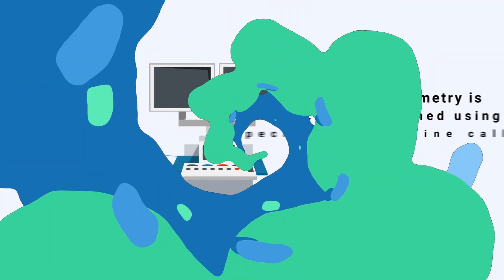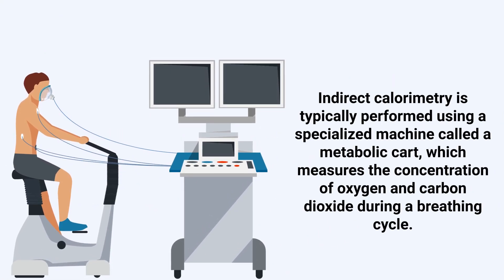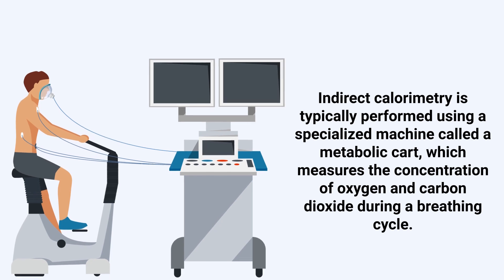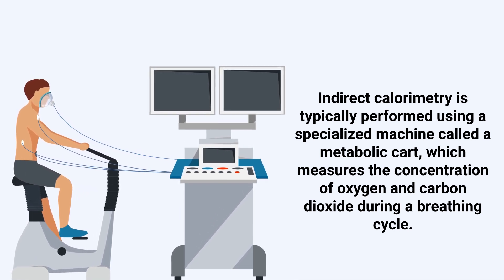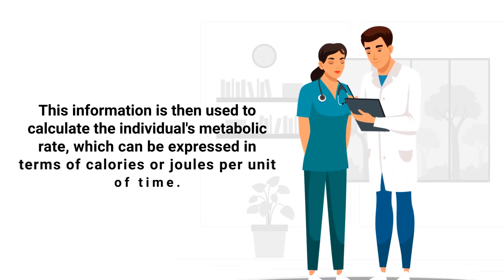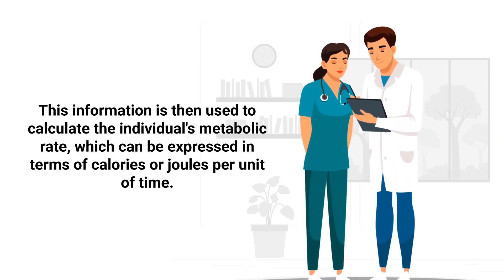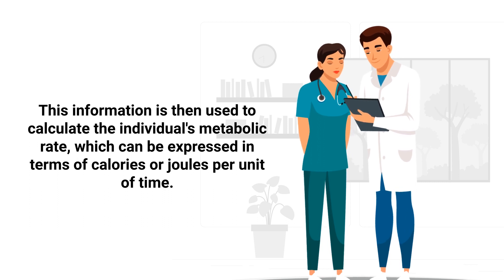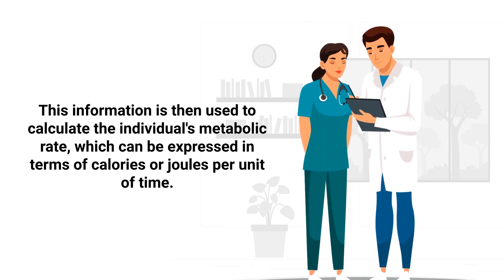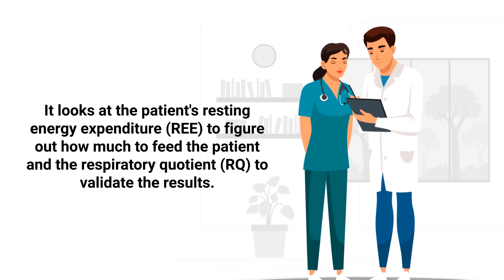Indirect calorimetry is typically performed using a specialized machine called a metabolic cart, which measures the concentration of oxygen and carbon dioxide during a breathing cycle. This information is then used to calculate the individual's metabolic rate, which can be expressed in terms of calories or joules per unit of time.